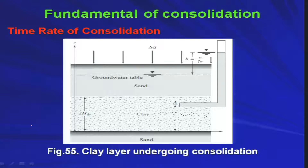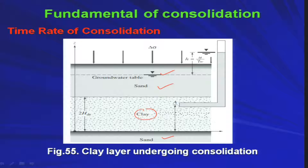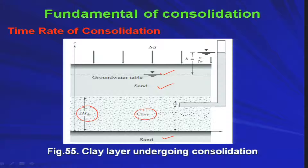We are considering a soil deposit with sand at the top, sand at the bottom, and clay sandwiched between these two sand layers. The groundwater table is positioned such that the clay deposit is completely saturated, which is one of the assumptions. The depth of the clay layer is 2H_dr — the reason for the factor of 2 will be explained later.